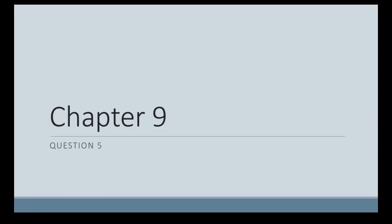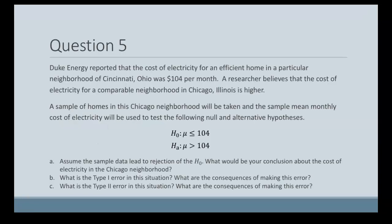Let's take a look at question 5 from chapter 9. So the question says, Duke Energy reported that the cost of electricity for an efficient home in a particular neighborhood of Cincinnati was $104 per month.